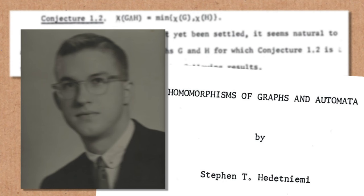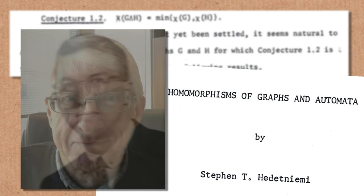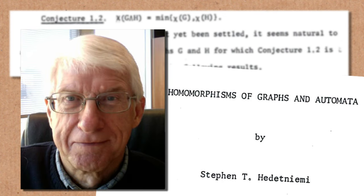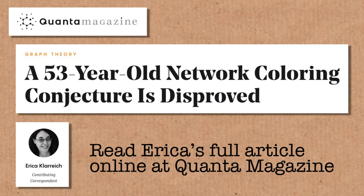Just because his counterexamples are that big, it does not mean that you need to go that big to get a counterexample. At present, mathematicians don't really know how small the counterexamples can be. It is possible that there are examples out there that are of a totally reasonable size. But now we know the conjecture is false, and so now mathematicians can start chipping away at how small these counterexamples can be. I was in touch with Hedetniemi by email, and he said that he was delighted — he was not at all invested in his conjecture having to be true. He was just happy to get an answer after 50 years.